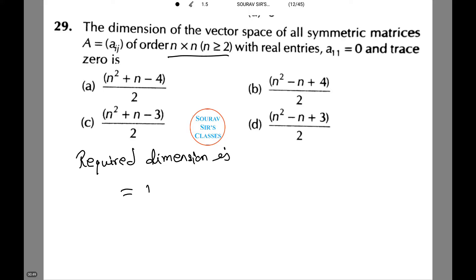This equals (n² - n)/2 + n - 2, which equals (n² - n + 2n - 4)/2 = (n² + n - 4)/2. Hence, option A is the correct one.